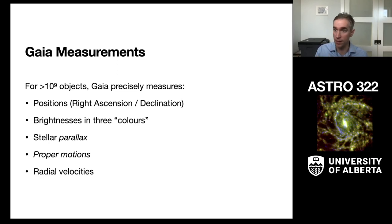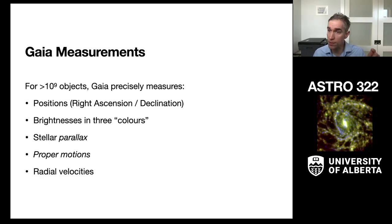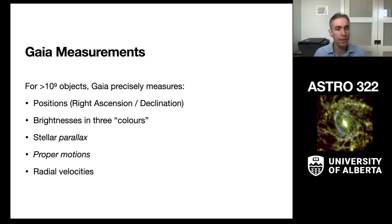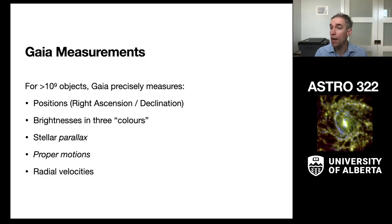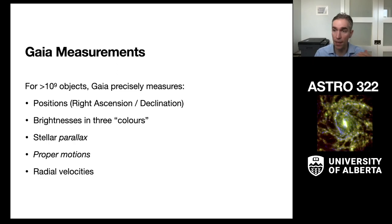For those billion stars, Gaia very precisely measures the positions of stars over time, their brightnesses in three bands, their parallax — which is derived from positions over time — their proper motion, which is another positional measurement over time, and the radial velocities of the stars using spectroscopy.